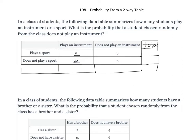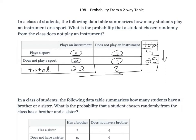We put totals here and here. The total people that play a sport — adding the two together — is 5. The total people that do not play a sport is 25. The total people that play an instrument is 22, and the total people that do not play an instrument is 8. If we add up the total of either the column or the row, it should always be the same — and we see it's 30 people. So 30 total people were in this study.